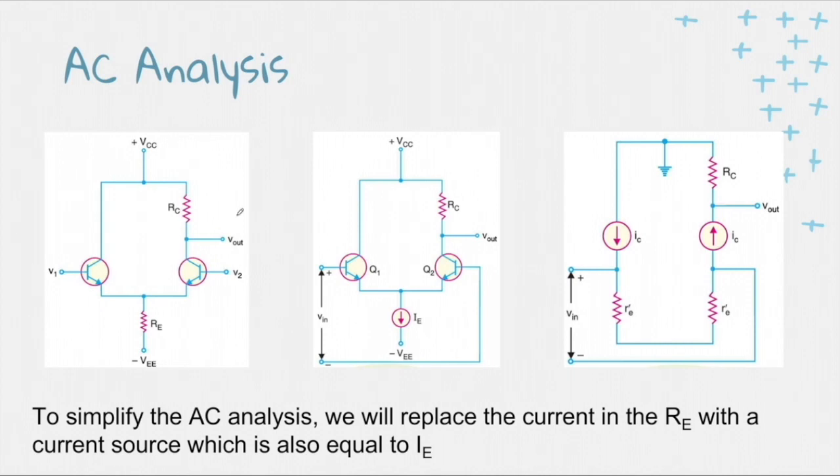Let's start with this diagram here. So this is the original diagram. And with this, we can generate a current IE on the resistor RE.